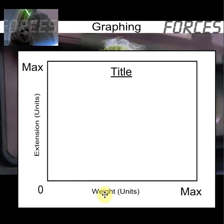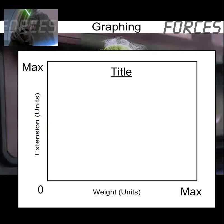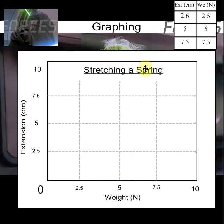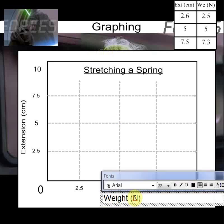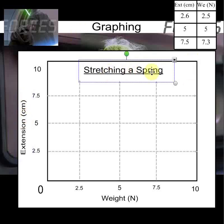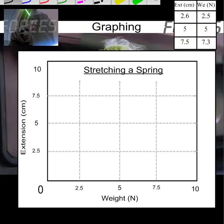It looks like when he changed the weights, there was extension — as in, something stretched. So the next thing you can do is add some numbers. I should probably add a title at this point. He stretched a spring — he was adding weights to the end of a spring. He's added the weight in Newtons, which is very important because weight is a force. He's got his units, and it's only going down by centimeters each time so it looks like there are small weights. He's called it 'Stretching a Spring' and he's got a little data table.